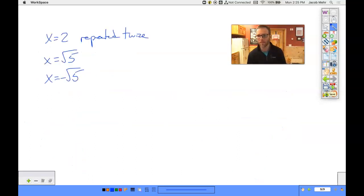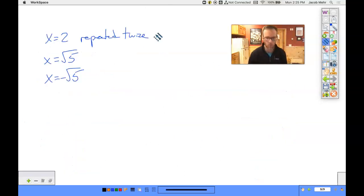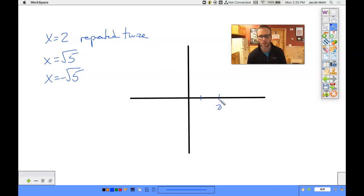So now remember, we're trying to figure out where is this greater than or equal to 0. So we need to consider what the graph looks like. Let me put my zeros on here. Let's call this 2.